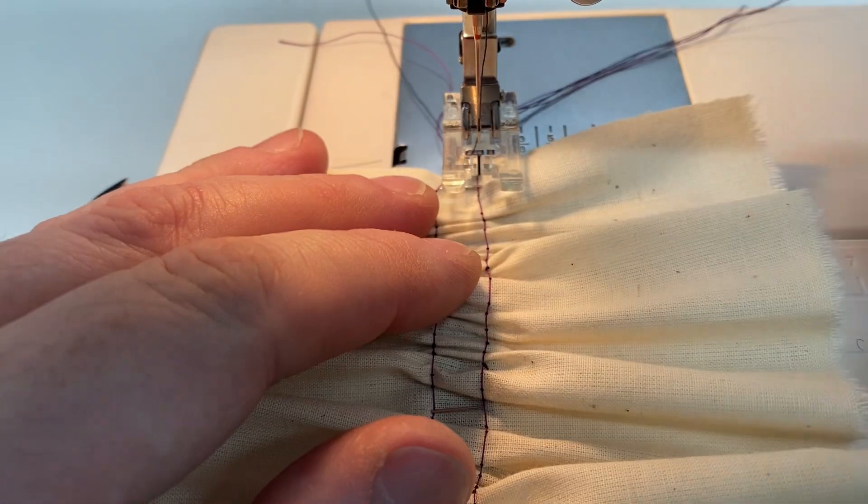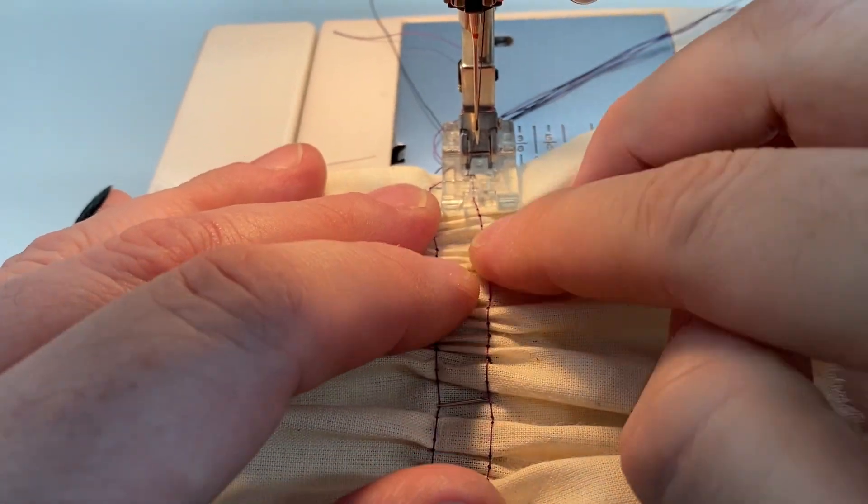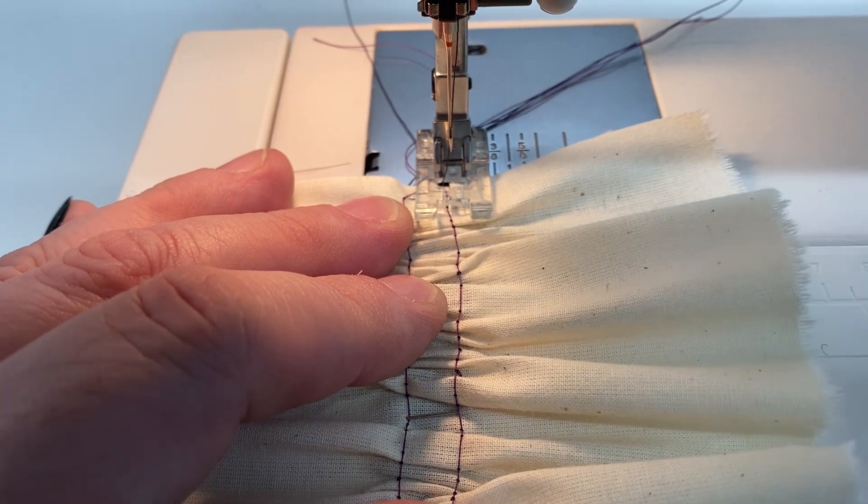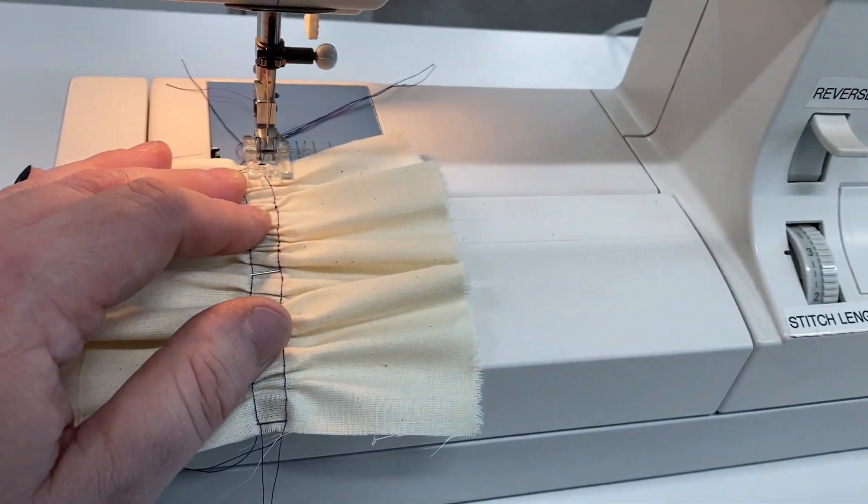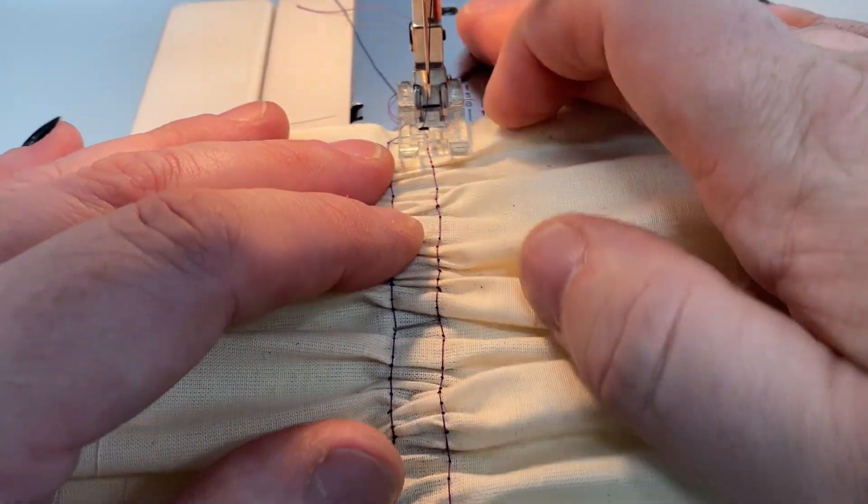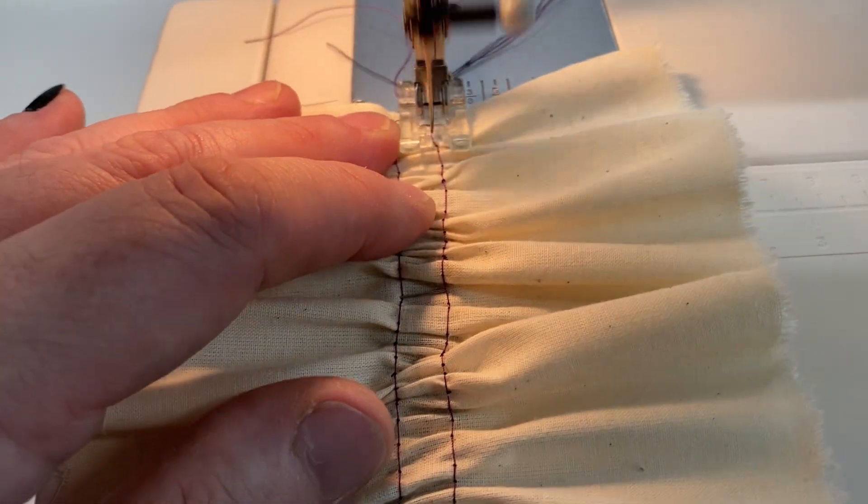And we're going to sew right where these marks are and this should be hitting our tape. Don't forget to reset your stitch length to a three and give it a whirl. See what happens. We are going to back stitch.